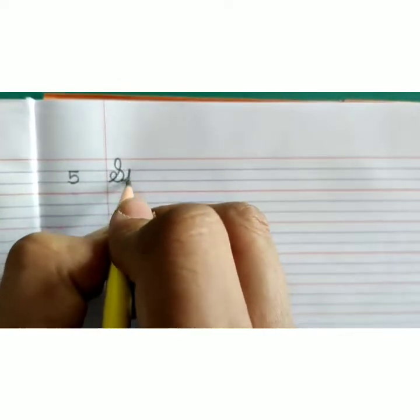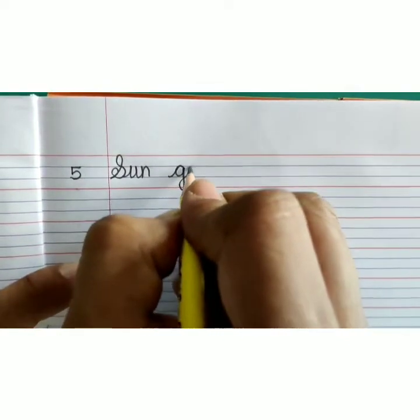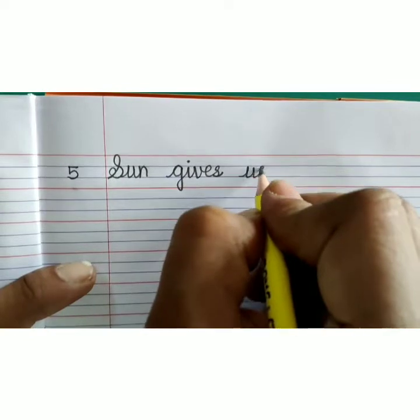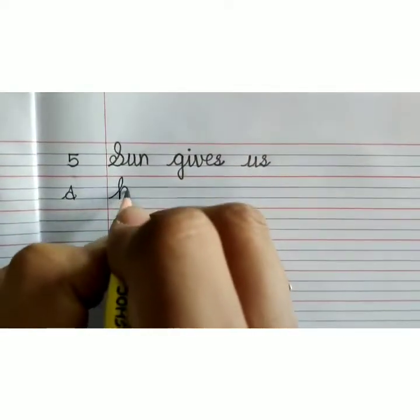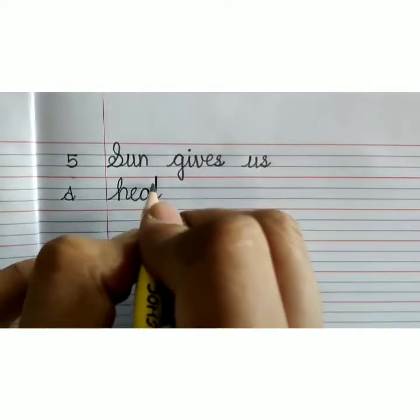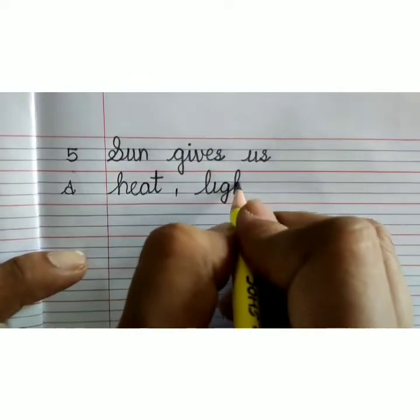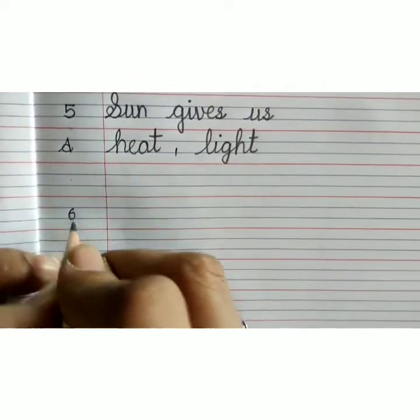Capital S-U-N, sun, G-I-V-E-S, gives, U-S, us. Sun gives us, answer: H-E-A-T, heat, comma, L-I-G-H-T, light. Leave one line, number 6.